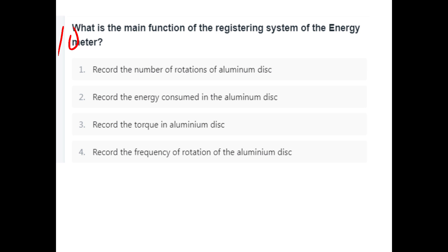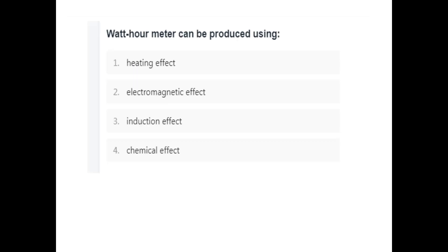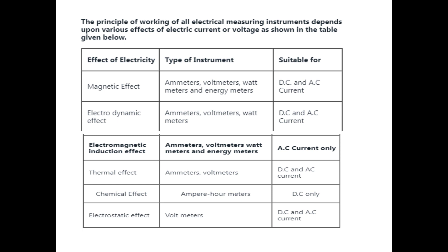What is the main function of the registering system of the energy meter? It is to record the number of rotations of the aluminum disc. Instruments by effect: Magnetic effect — ammeter, voltmeter, wattmeter, energy meter (AC and DC). Electrodynamic effect — ammeter, voltmeter, wattmeter (AC and DC). Electromagnetic Induction effect — ammeter, voltmeter, energy meter, wattmeter (AC only). Thermal effect — ammeter, voltmeter (AC and DC). Chemical effect — ampere hour meter (DC only). Electrostatic effect — voltmeter (AC and DC).